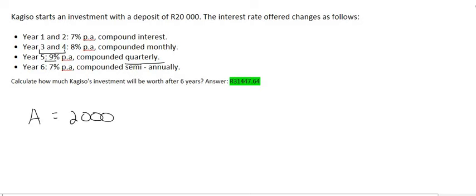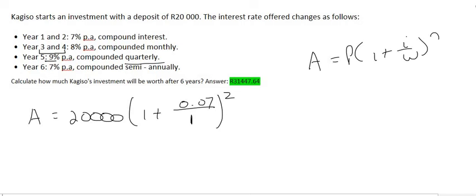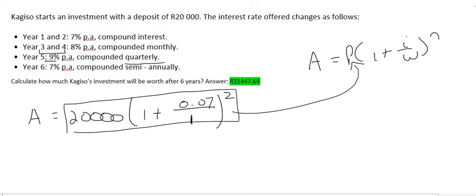So he starts off with 20,000 Rand and the first interest is seven percent. That's yearly so we can put a little one there if you want to, it doesn't really matter. And that was for two years. Then instead of getting this answer and then using it for the next part, we would in the next part have used this formula again and you would have taken this answer and you would have used that over there right. So instead of working this out let's just leave it like the way it is. It just works out a lot faster.